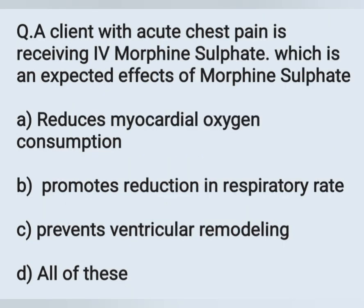Next question: a client with acute chest pain is receiving IV morphine sulfate. Which is an expected effect of morphine sulfate? A) reduces myocardial oxygen consumption, B) promotes reduction in respiratory rate, C) prevents ventricular remodeling, D) all of the above.